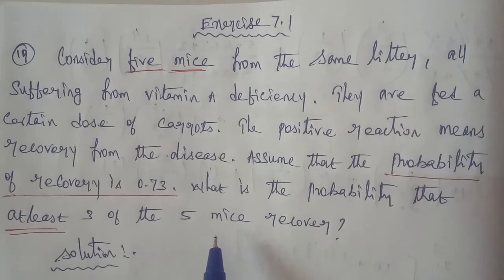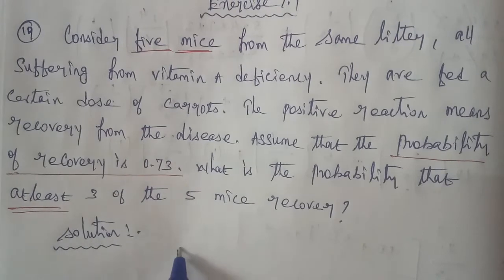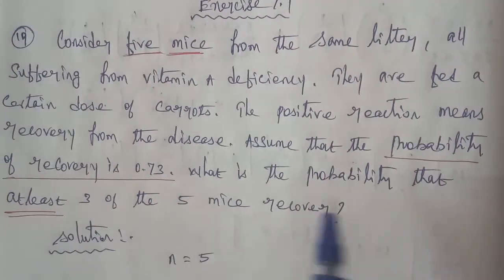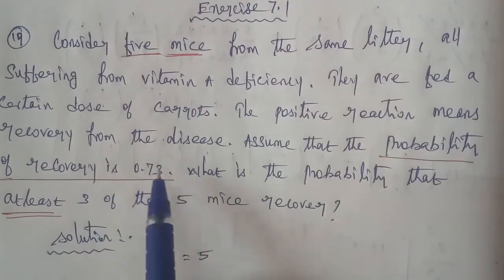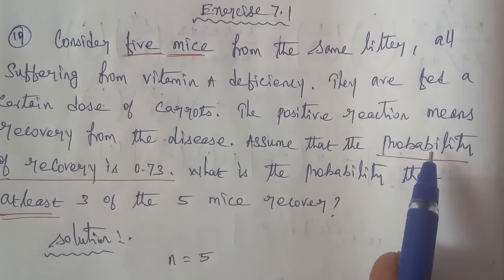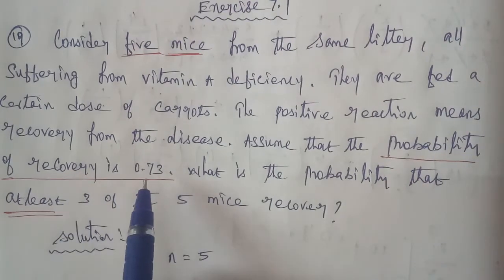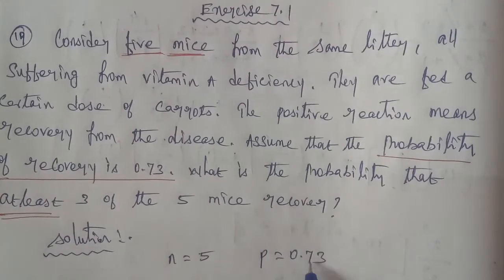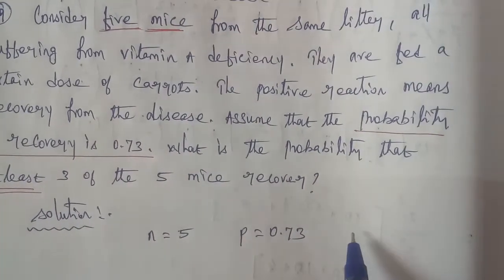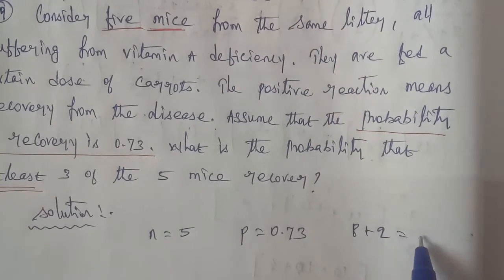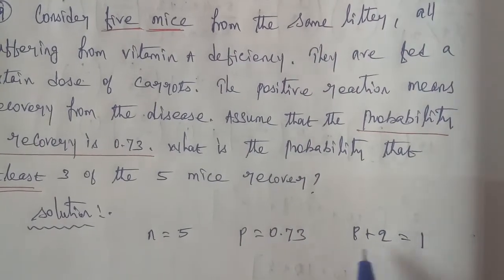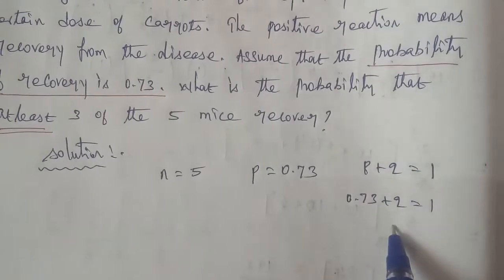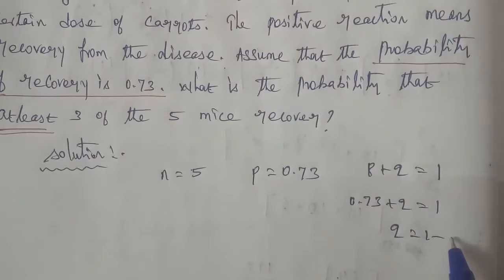Given data: n is equal to 5. The probability of recovery — so this is the probability of recovery — is 0.73, therefore P is equal to 0.73. Next, Q value: P plus Q is equal to 1, so 0.73 plus Q is equal to 1, therefore Q is equal to 1 minus 0.73, so Q is equal to 0.27.